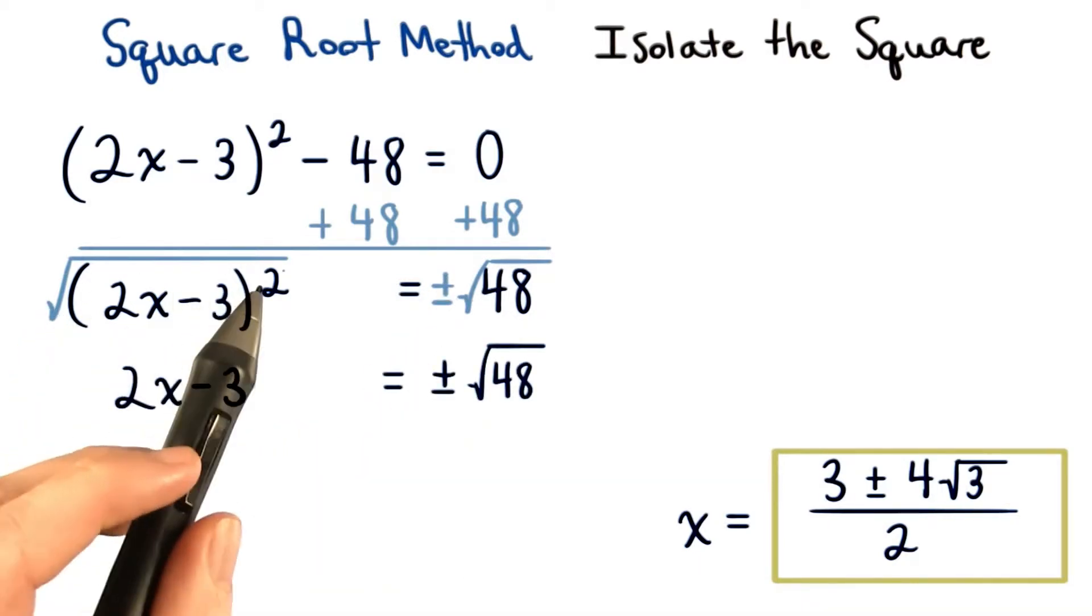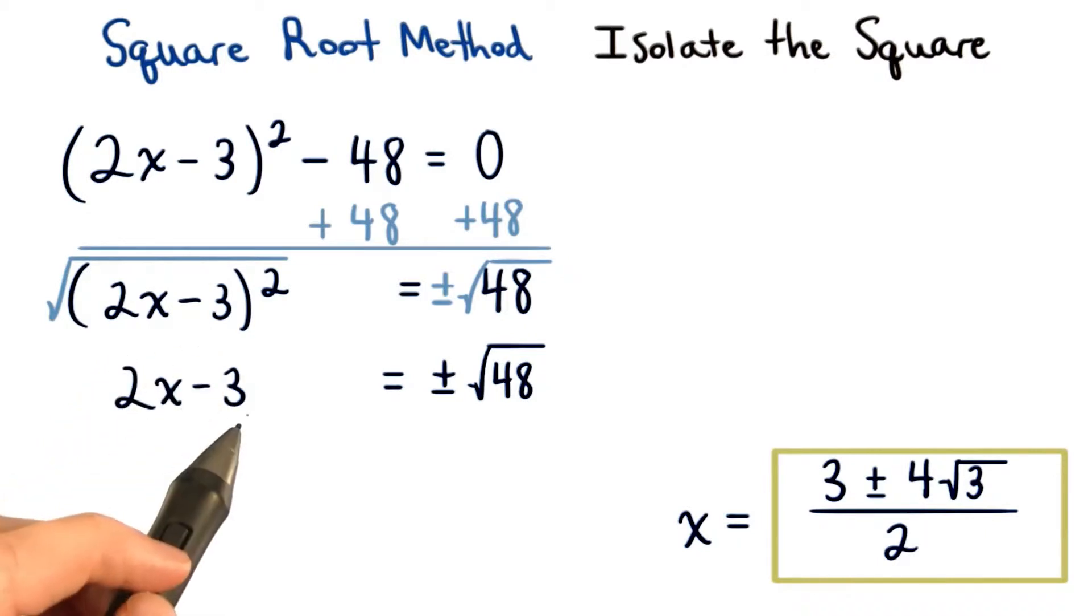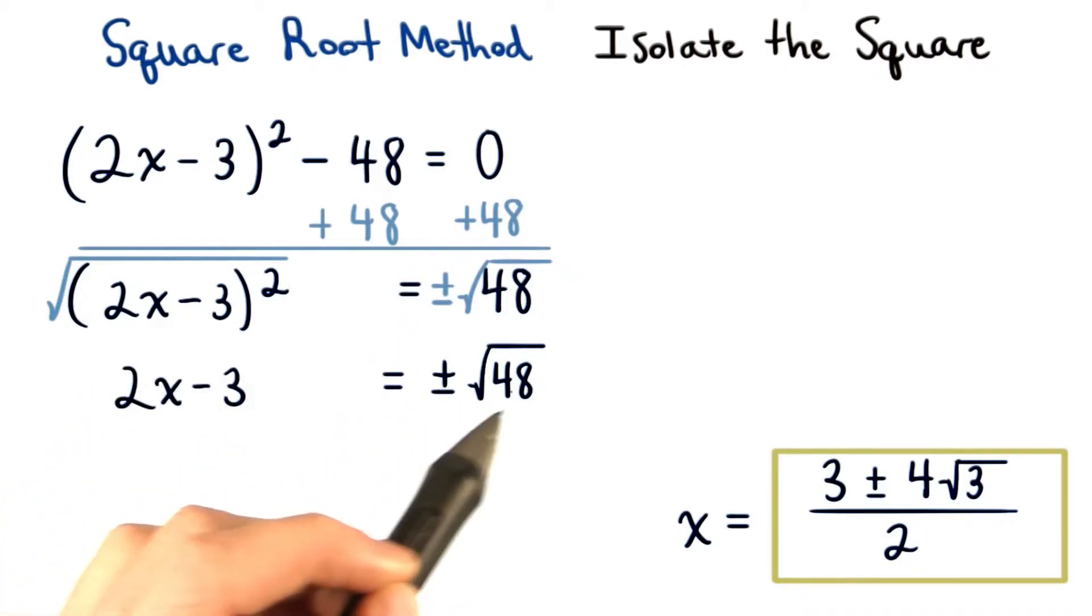This square root undoes our square, so we're left with the quantity 2x minus 3. On the right, we still just have plus or minus root 48.